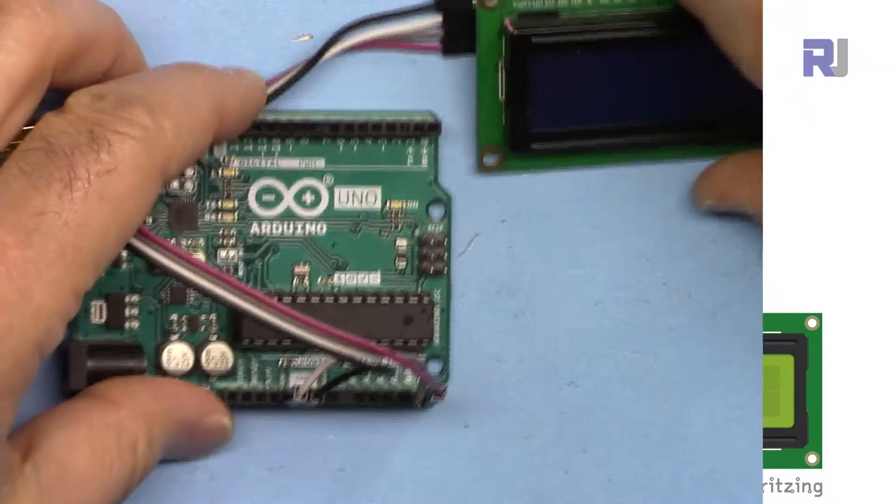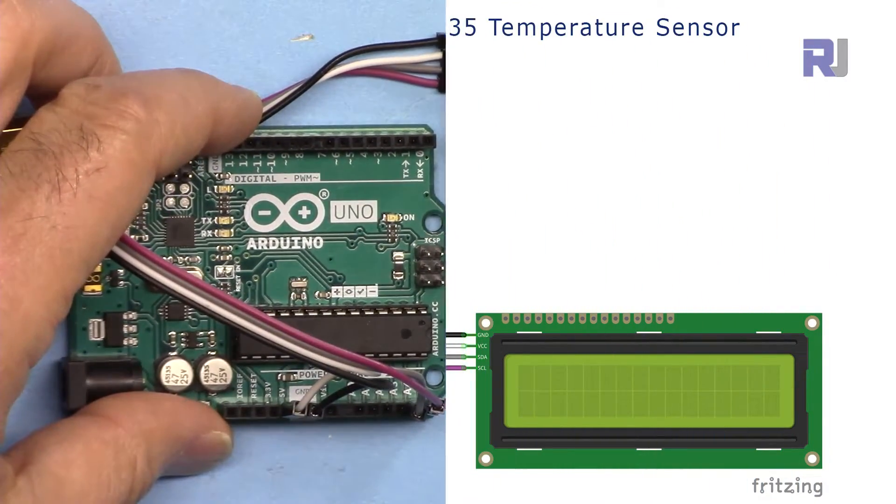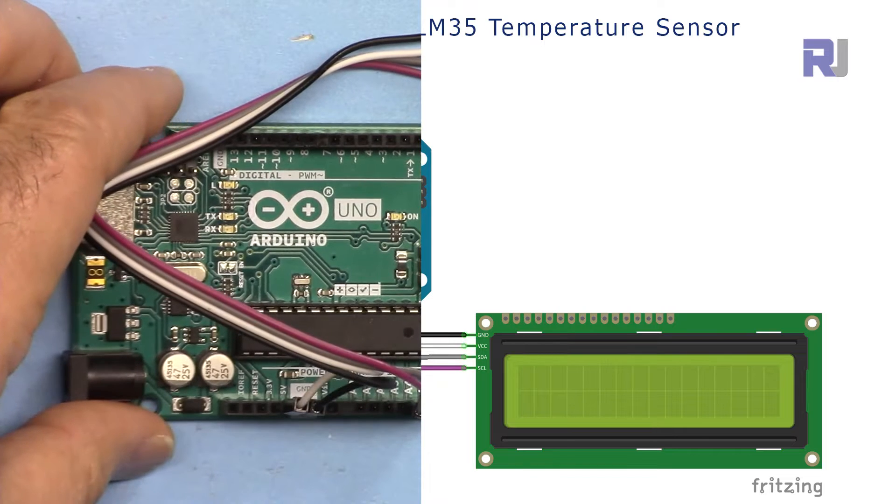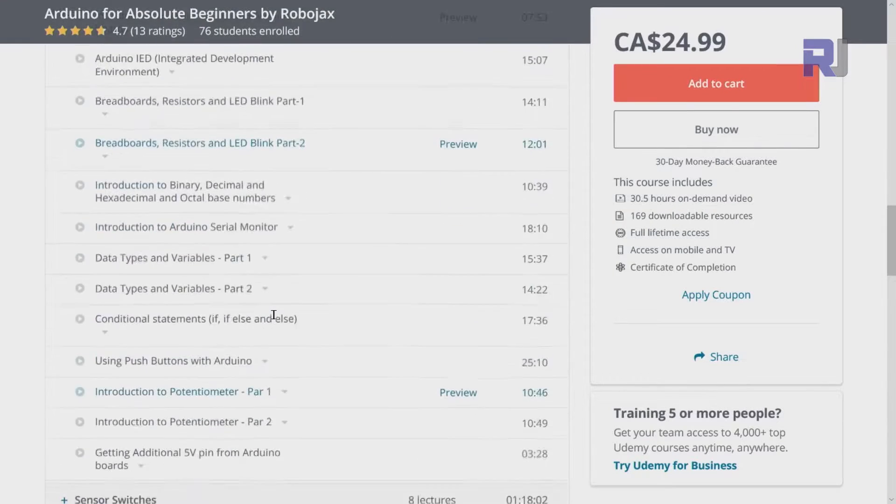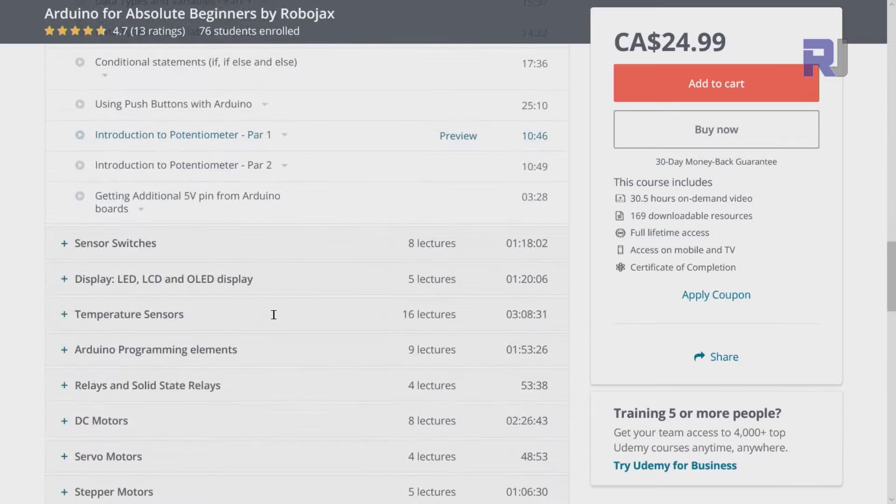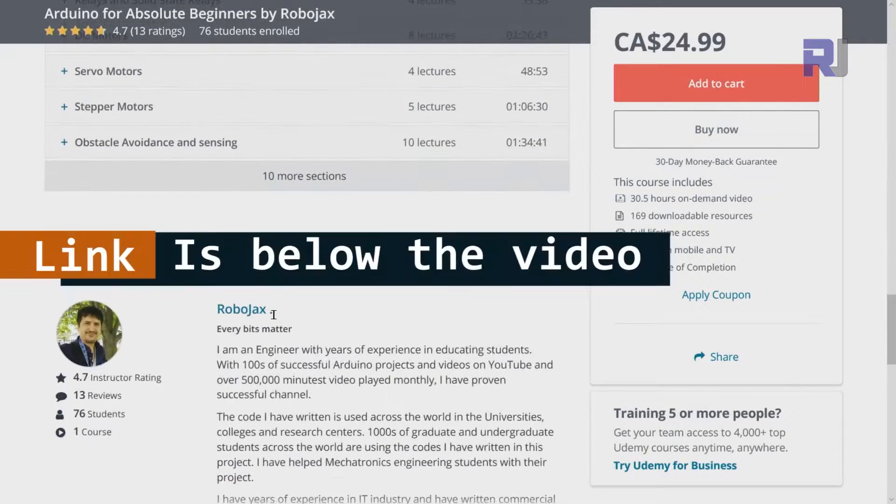If you need the wiring diagram for this, it is available as part of my Arduino course at Udemy.com. If you want to learn Arduino, I have a bestseller course on Udemy where you can learn Arduino from ground up with hundreds of projects, all course material, library codes, wiring diagram, everything available in one place. The link for my Arduino course is below this video in the description.